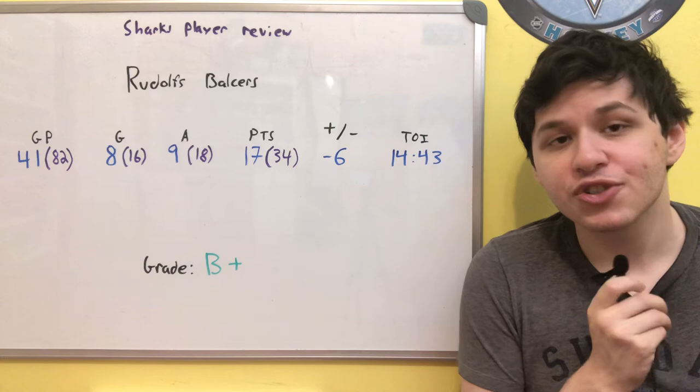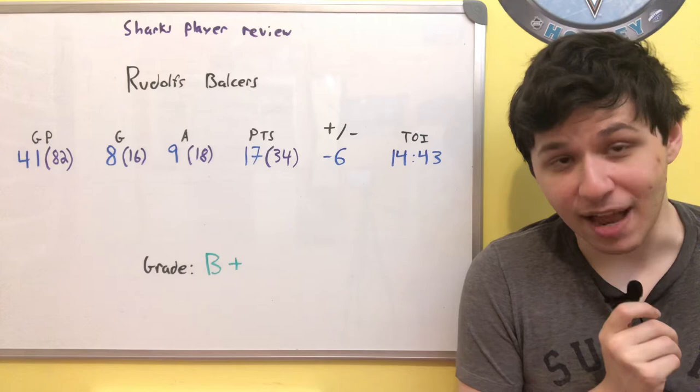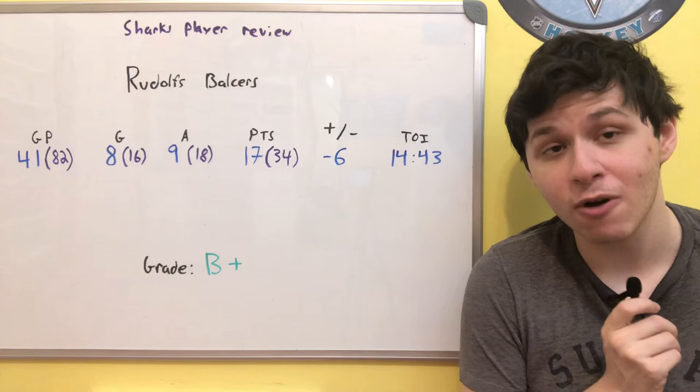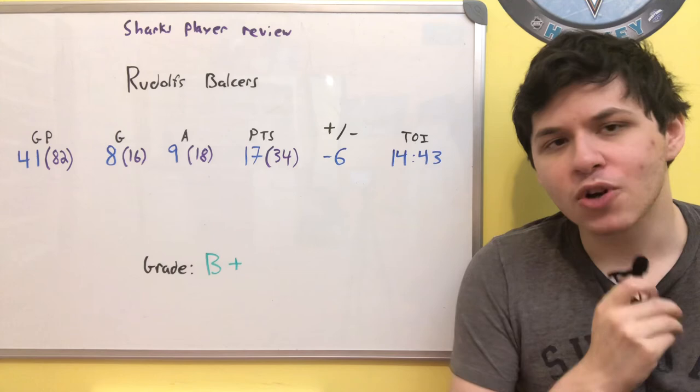But he put himself in the right place. He had the right reads on the situation, so much so that as time went on, he wasn't just getting even strength ice time, but he ended up getting some power play ice time and even near the end of the season getting some short-handed ice time, which is very interesting to see for a player who was playing their first season here with the Sharks. Technically not his first, not his rookie season, because he did have that with the Senators a couple of years ago, but his first ever season with the Sharks. And when you consider how Bob Boughner has treated other young players this season and in the past, that is very impressive.